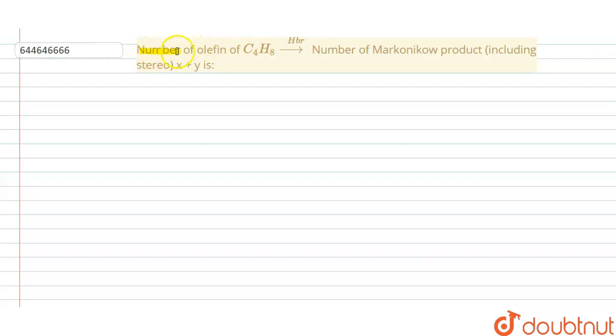Number of olefin C4H8 react with HBr. Number of Markovnikov product including stereo, x plus y value will be. So we are finding the value of this x plus y which is with the stereo isomers.